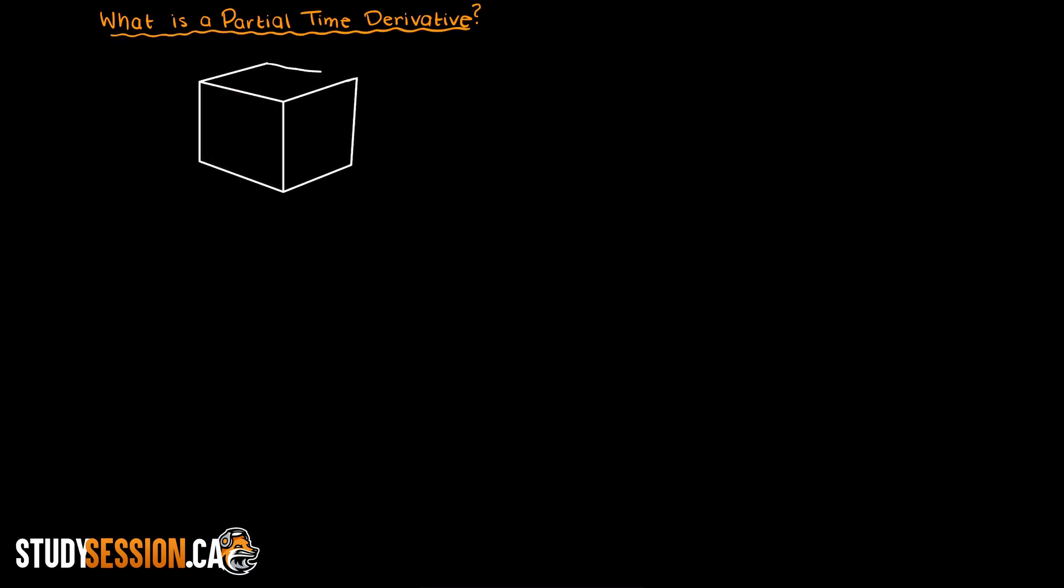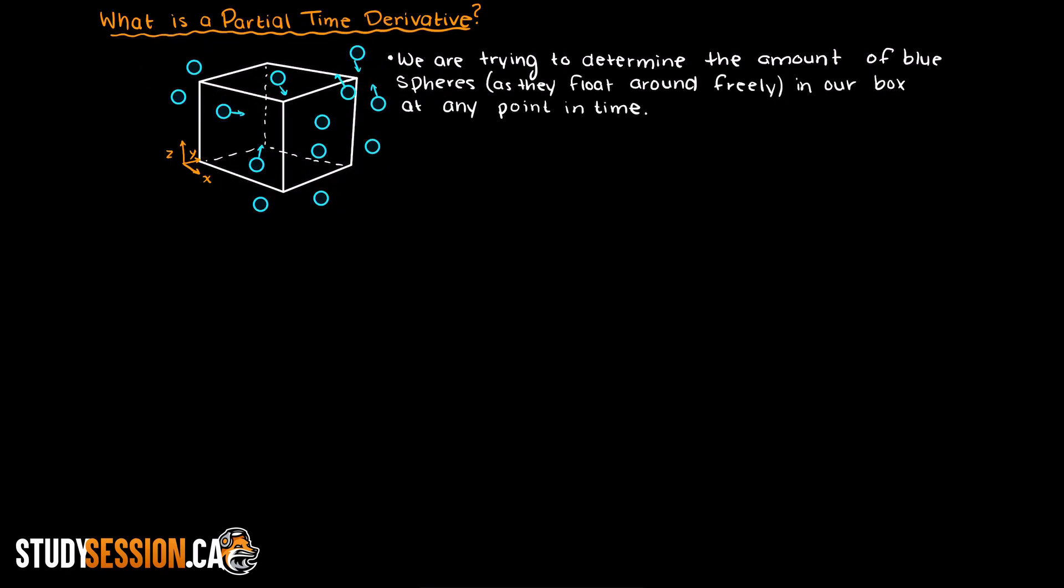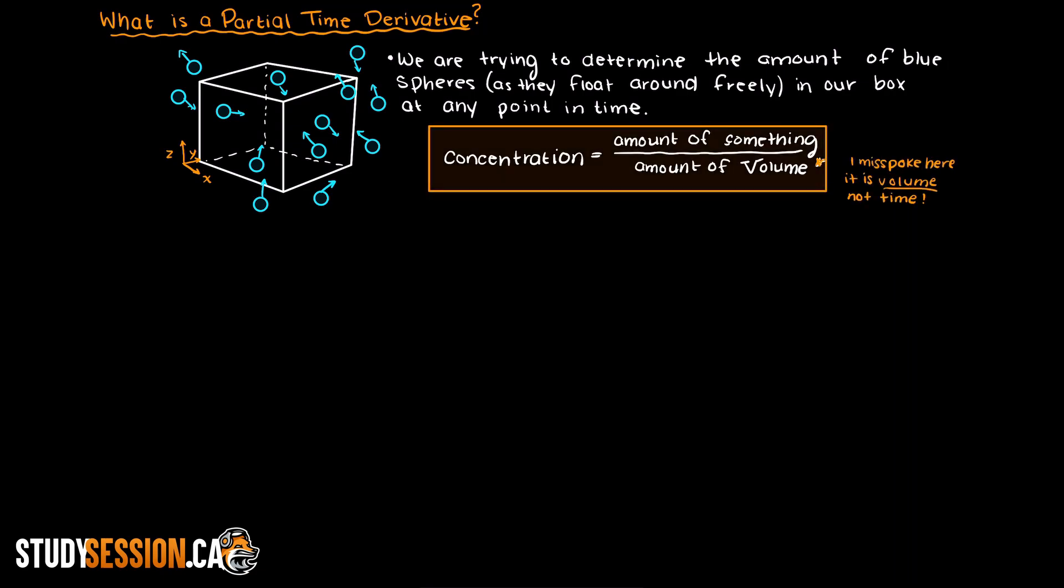So, let's assume that we are examining this cube in space, and we are trying to determine the amount of blue spheres that are in our box at any given time. Well this is a concentration, right? It's an amount of something over time.